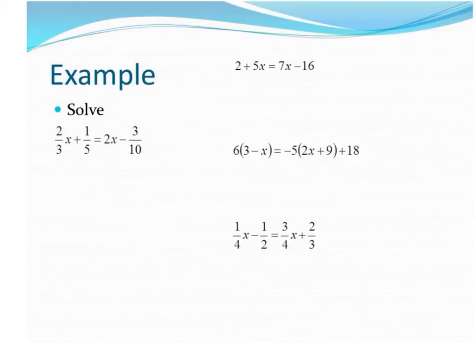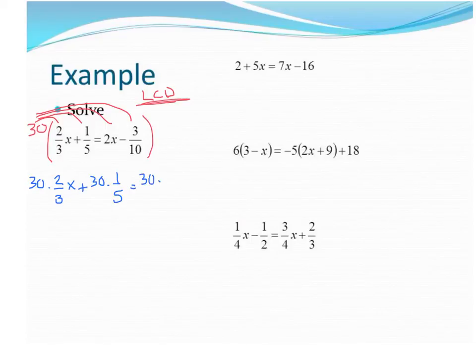We're just going to do one more example today. This one that starts with 2 thirds here. Don't let the fractions get you messed up from the beginning. My suggestion, you multiply the entire equation by the least common denominator. So if we were going to make common denominators, I think we would make everything be 30. So I'm going to multiply by 30. I'm going to distribute that to all the terms. And I'm going to write out this step here. We get 30 times 2 thirds x plus 30 times 1 fifth equals 30 times 2x minus 30 times 3 tenths.